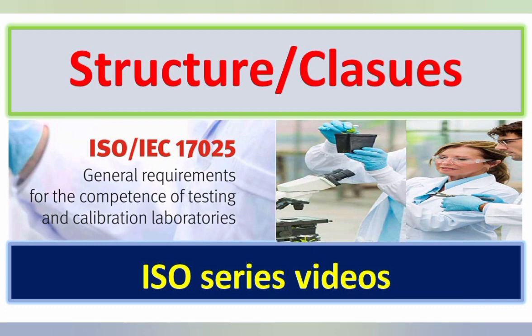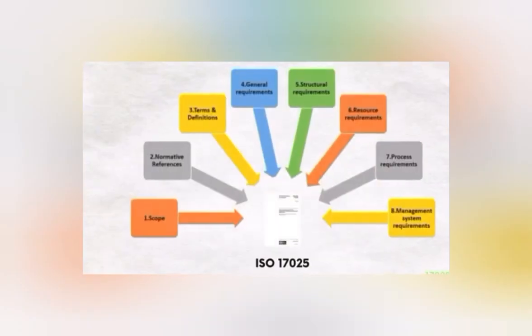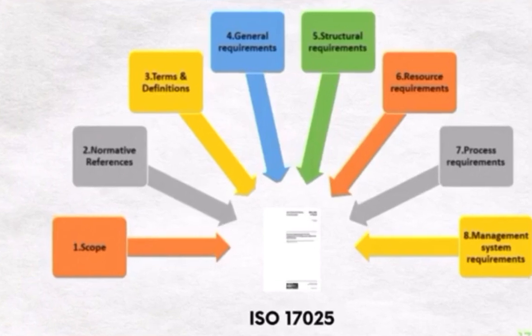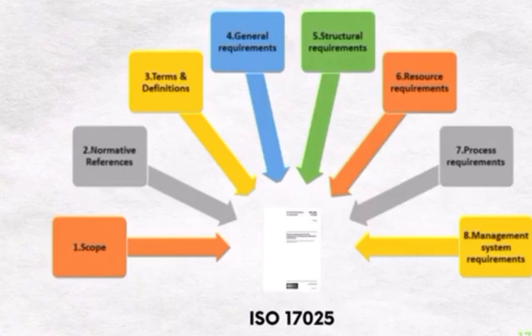Now we discuss the structure and number of clauses of ISO 17025 standard. The standard has modified the structure to include: scope, normative references, terms and definitions, general requirements, structural requirements, resource requirements, process requirements, and management system requirements.